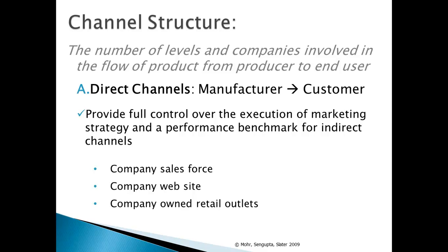There are two main types of distribution channels. The first is called a direct channel, in which the manufacturer distributes directly to the customer or end user, meaning there are no intermediaries. Direct channels give manufacturers full control over their marketing strategy. A direct channel could include when a company has its own sales force — for example, Apple Computer uses its own sales force to call on universities as a major customer — when a company has its own dot-com website that handles orders and fulfillment, and in the case of company-owned retail outlets, again as in the case of an Apple-owned store.